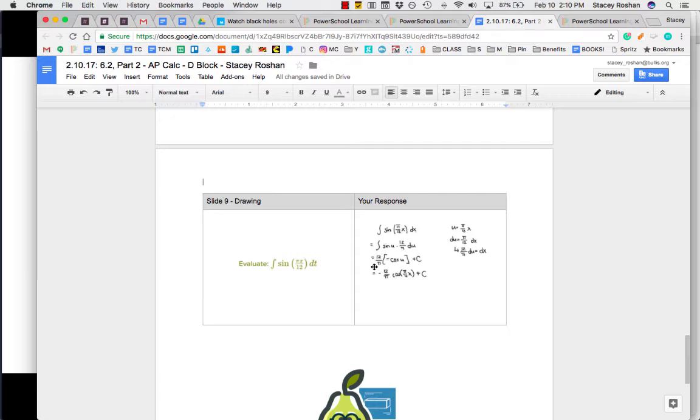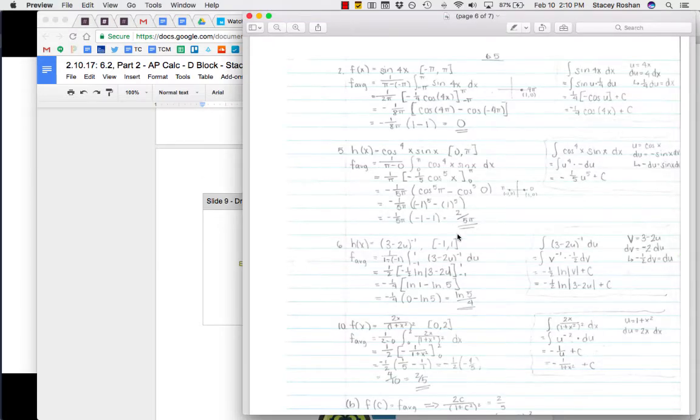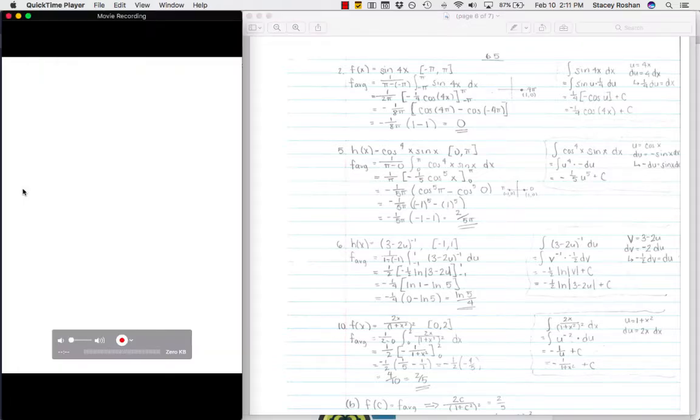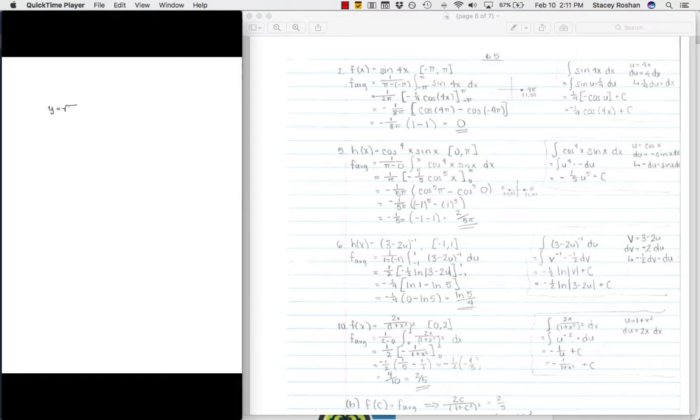Okay, so step one, go over the Pear Deck. Step two, go over these textbook solutions from 6.5. Step three, make sure that you know a question with a revolving. So I haven't practiced one of those in a while. Let's go ahead and just do the region bounded by the curves y equals root 8x and y equals 2x. You will not have a calculator, so you need to know the general shape of these things.